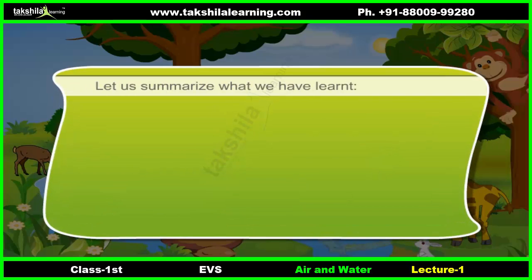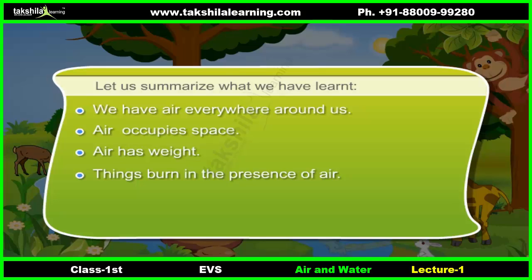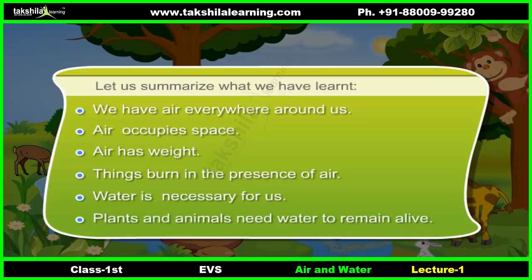Let us summarize what we have learnt. We have air everywhere around us. Air occupies space. Air has weight. Things burn in the presence of air. Water is necessary for us. Plants and animals need water to remain alive.